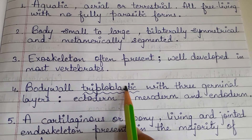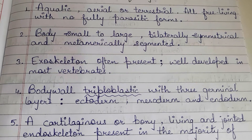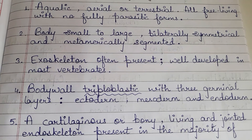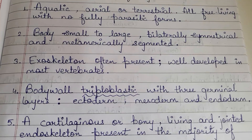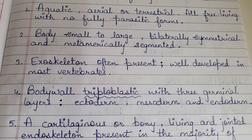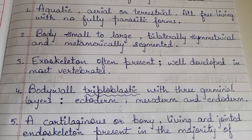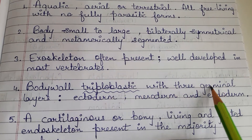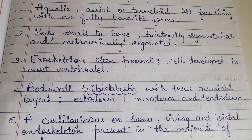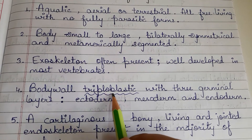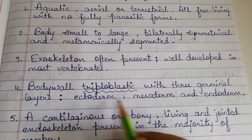Body wall is triploblastic with three germinal layers: ectoderm, mesoderm and endoderm. Triploblastic means three germinal layers are present. These germinal layers form during embryo development — during the processes of blastulation and gastrulation. At the time of embryonic development, ectoderm, mesoderm and endoderm are all formed. So in Chordata, the body wall is triploblastic, containing these three germinal layers.